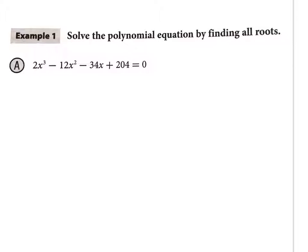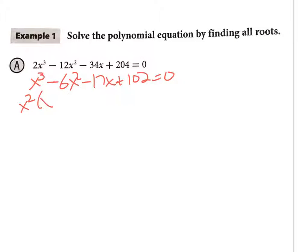Solve this polynomial finding all roots. It has four terms, so I'm thinking grouping. It's a cubic, so I expect three answers. Everything is even, so I'll divide both sides by 2: x³ − 6x² − 17x + 102. Grouping the first two terms gives x²(x − 6), and factoring −17 from the last two terms gives −17(x − 6). Since (x − 6) appears in both, I factor it out.